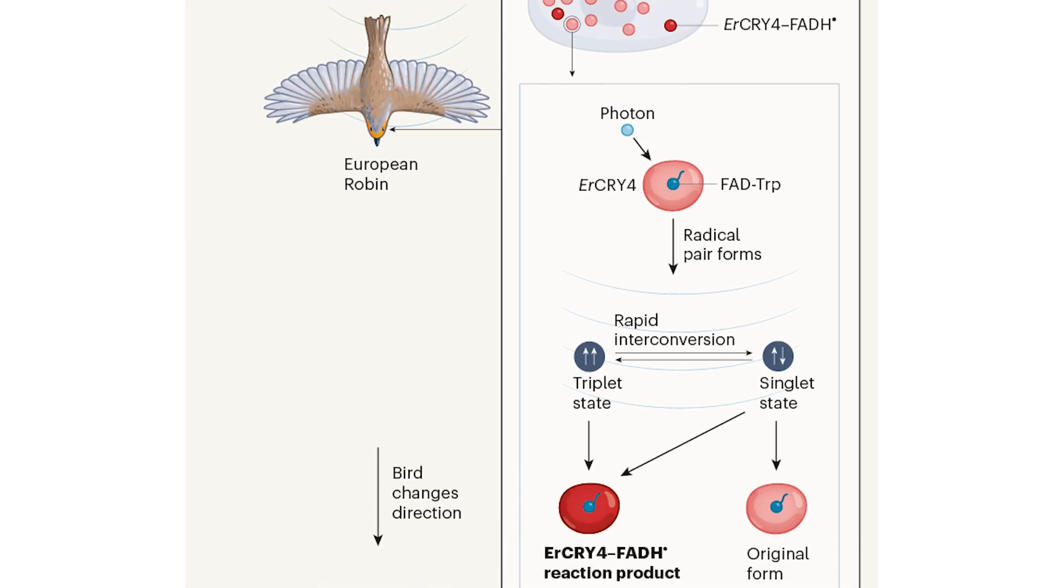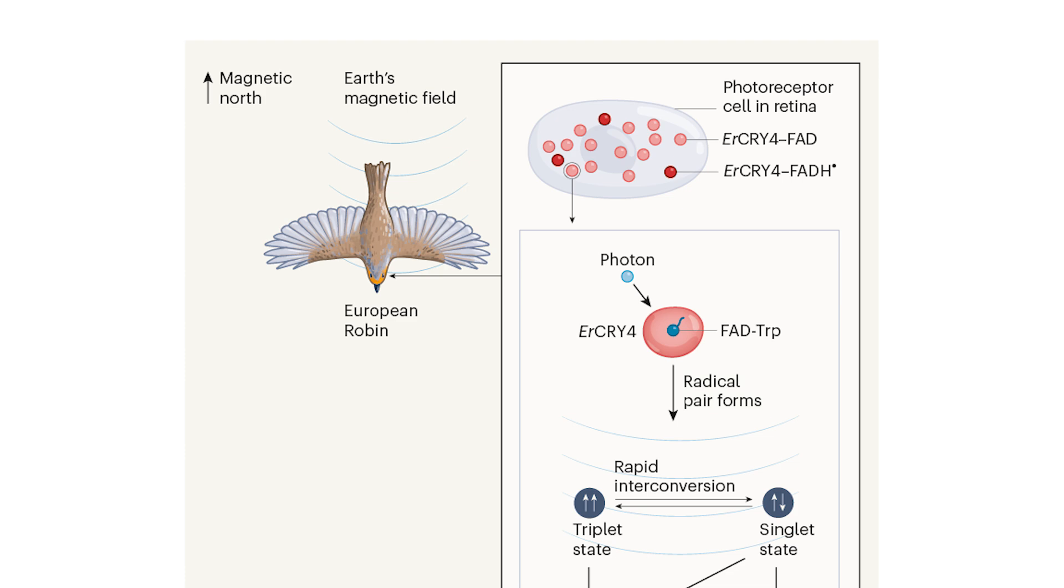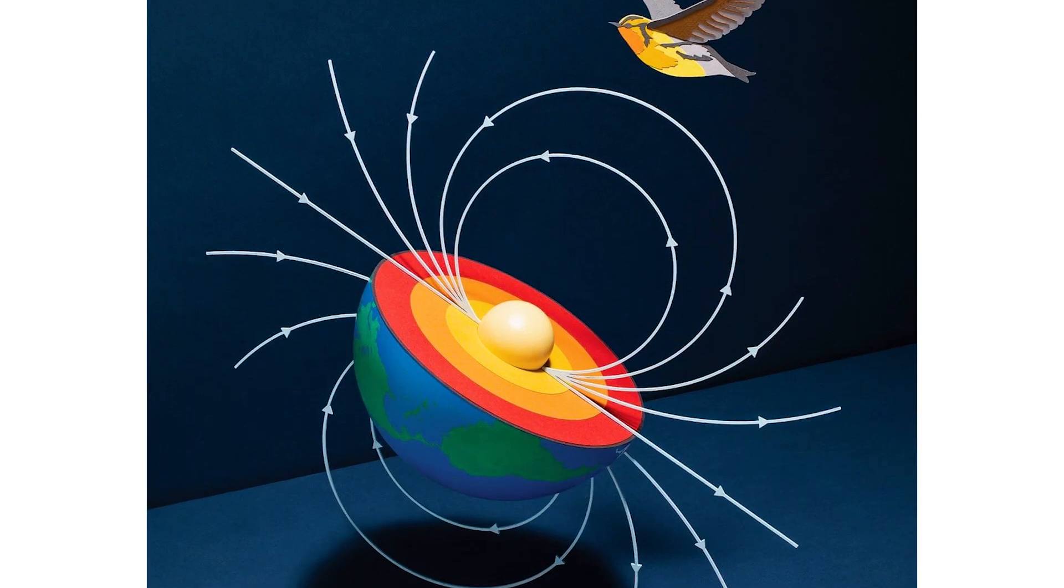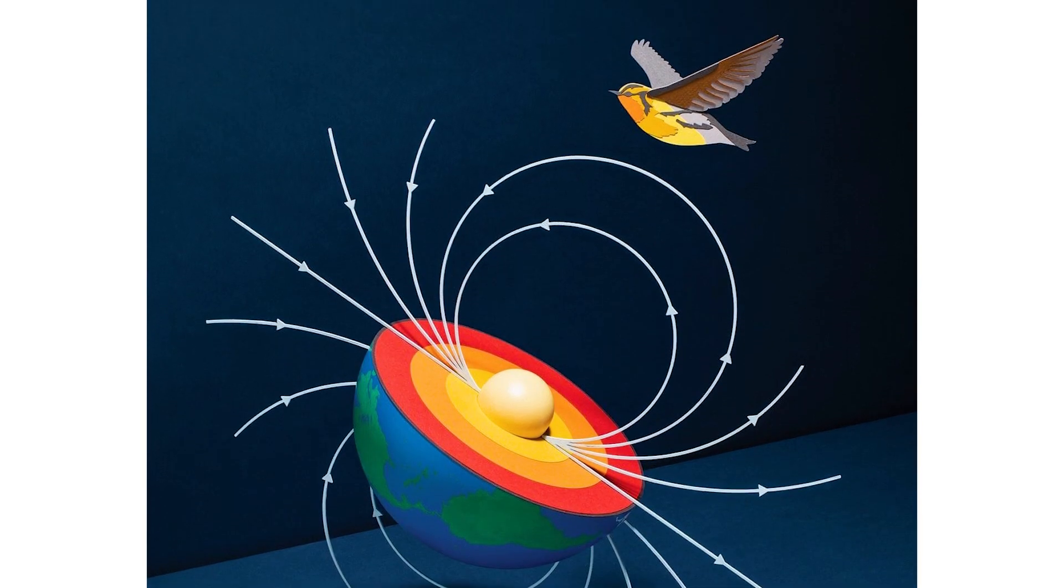This theory was strengthened when researchers found that very weak radio frequencies, which can disrupt quantum entanglement, interfered with birds' navigational abilities.